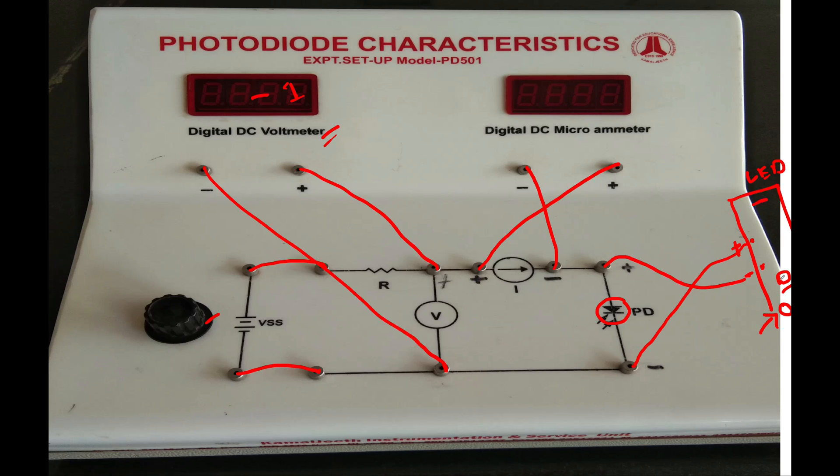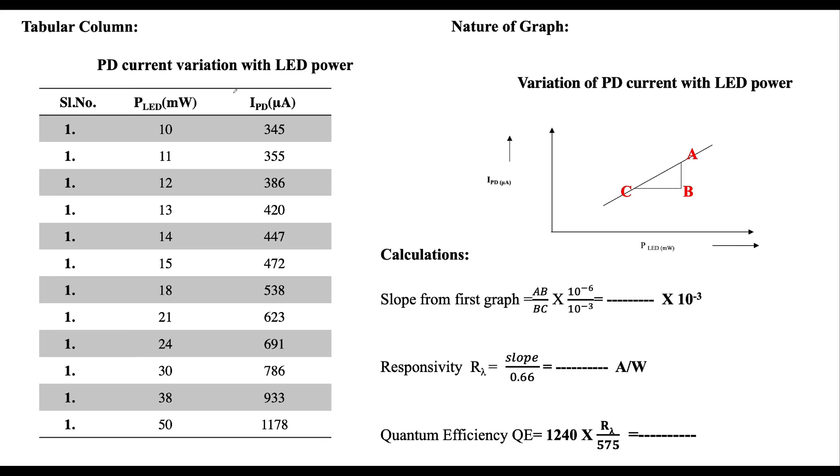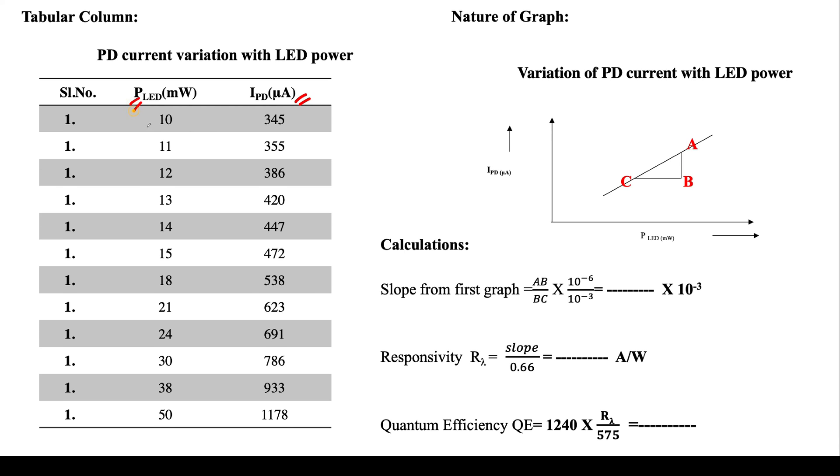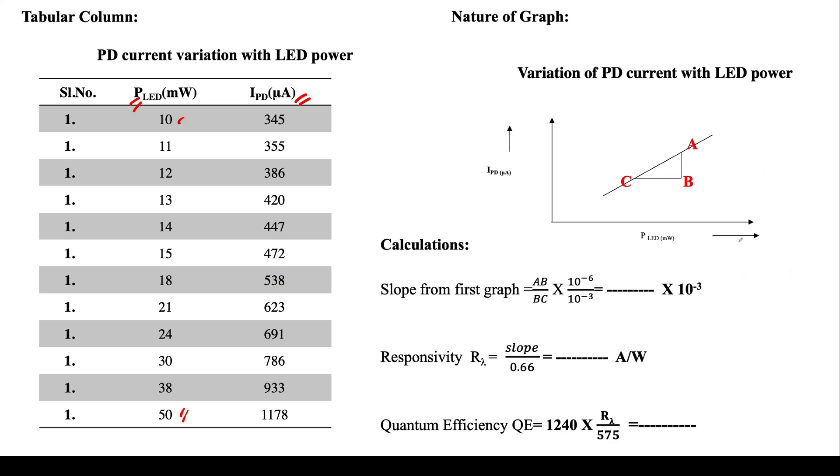...input current to this LED so that you can control the intensity of the LED. Once you're done with the initial setup, you need to note down the current, which is in microamps. LED intensity will be varied from 10 milliwatts to 50 milliwatts. You need to change it by using this knob.